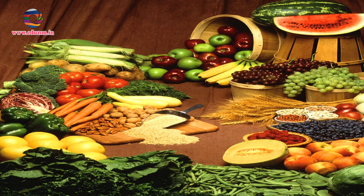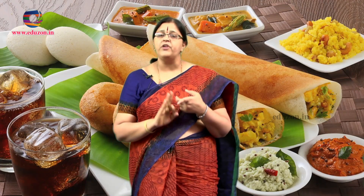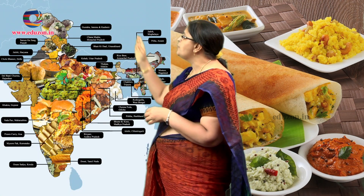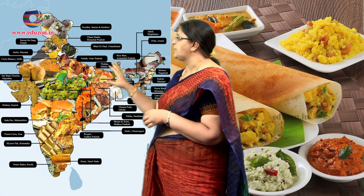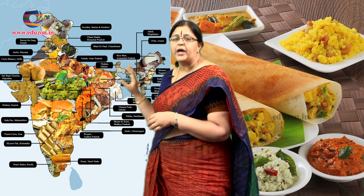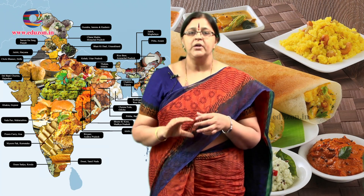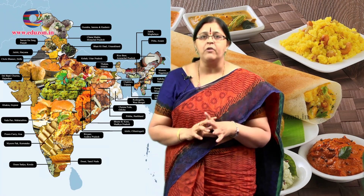Since many years, we know that man's basic necessities are three: food, clothing, and shelter. So we are going to talk about food. Different people have different choices. If you see the food items throughout the country, each state has its own food item. India has got 29 states, and 29 states have 29 varieties of food.